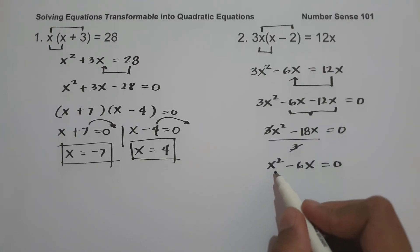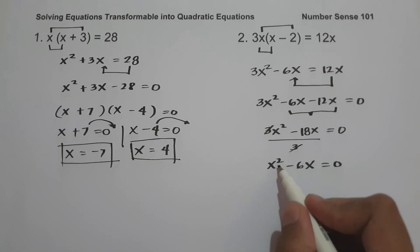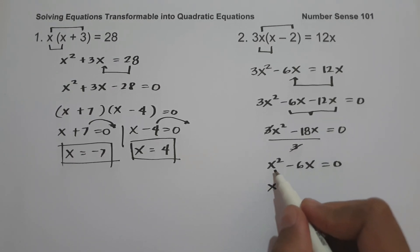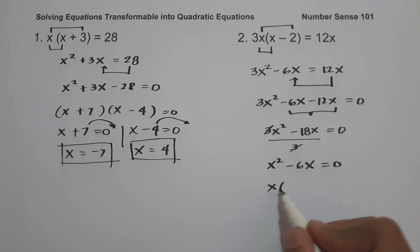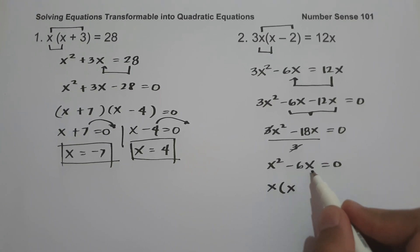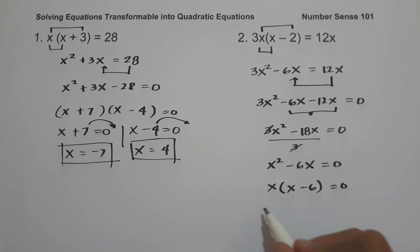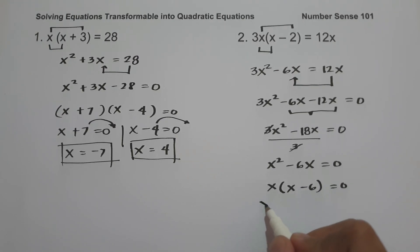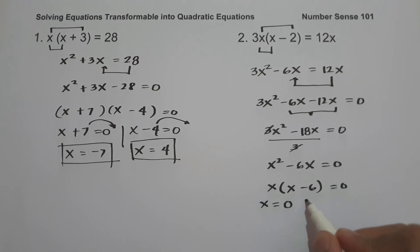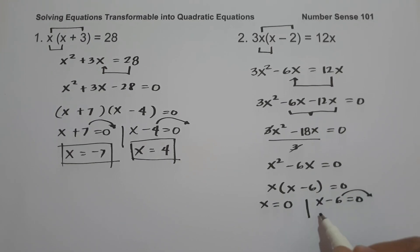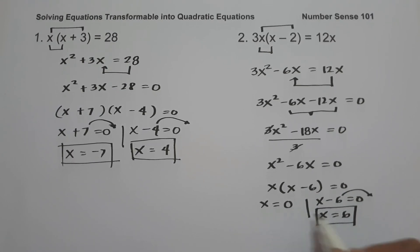The greatest common factor between x squared and negative 6x is x. Dividing: x squared divided by x is x, and negative 6x divided by x is negative 6. Equating to zero, the values of x are x equals 0 and x minus 6 equals 0, giving x equals positive 6. This will be our answer.